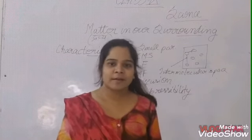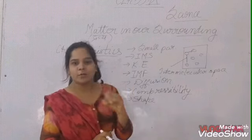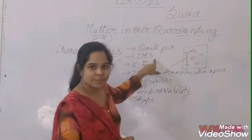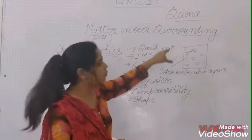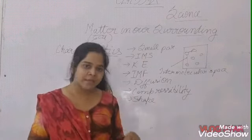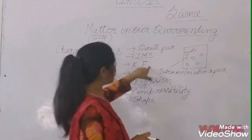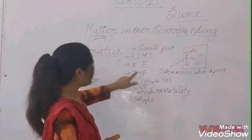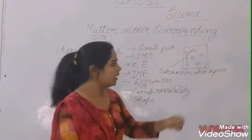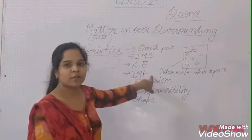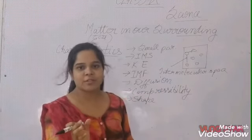Next, we will add characteristics of matter. The matter is made up of small particles. Inter-molecular space - what is found between two particles or two molecules is known as inter-molecular space. Next is kinetic energy - these particles move around, this energy is known as kinetic energy. Inter-molecular force of attraction - the force of attraction which bounds the molecules. And diffusion.